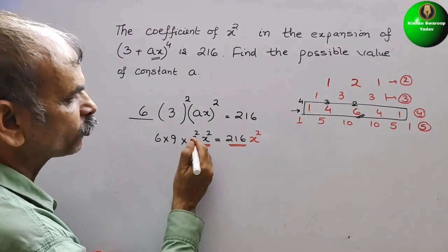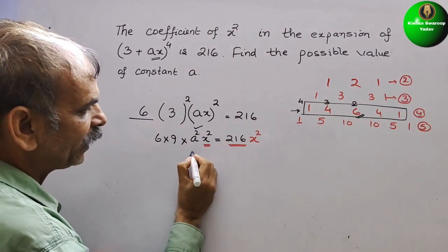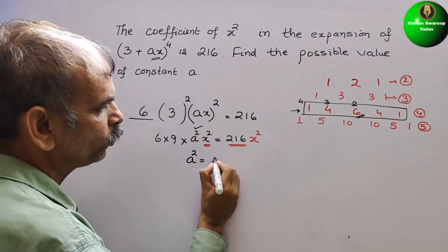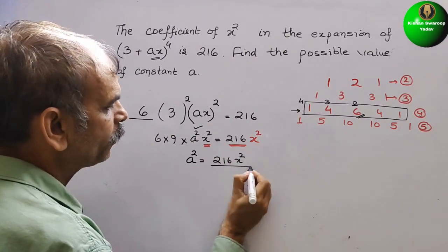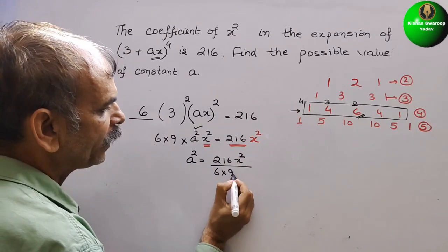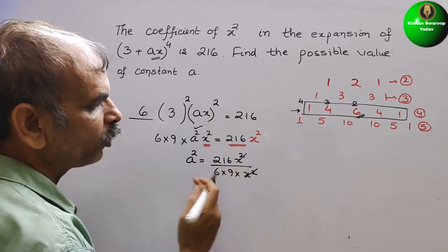So what is your a²? That we have to find it out. Now we can say a² is equal to 216 × x² by 6 × 9 × x². So this x² x² gone.